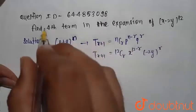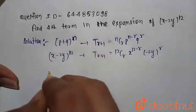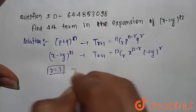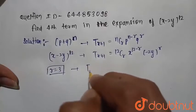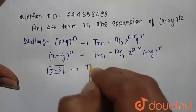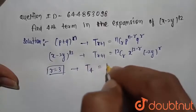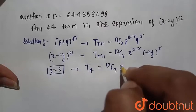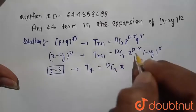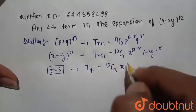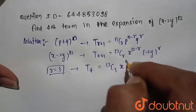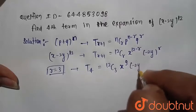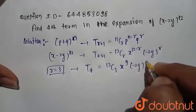We want to find the fourth term, that is r is equal to 3. The fourth term of the expansion is 12C3, x raised to power 12 minus 3, that is equal to 9, and minus 2y raised to power 3.